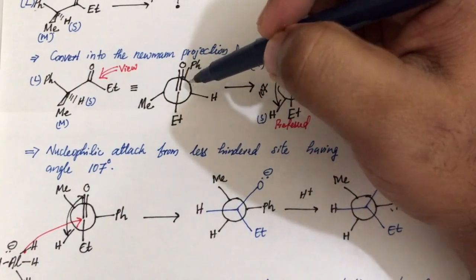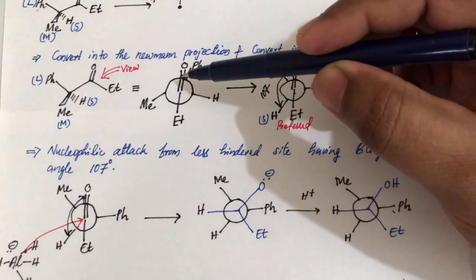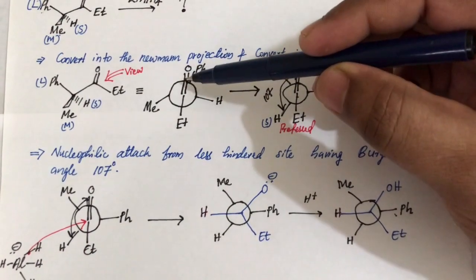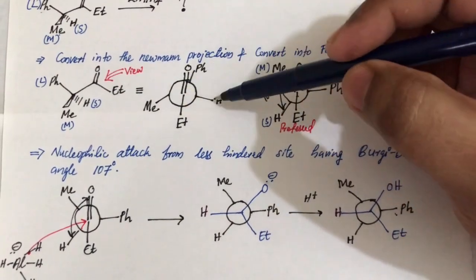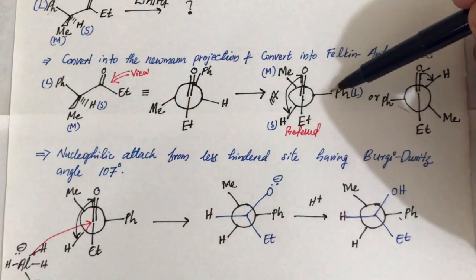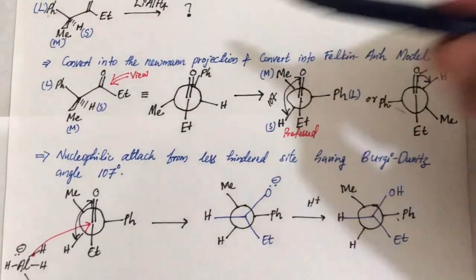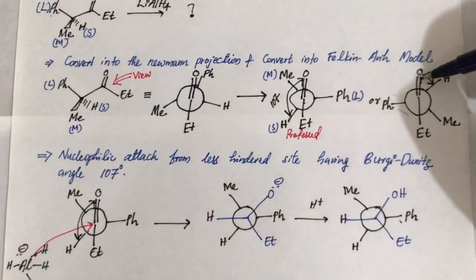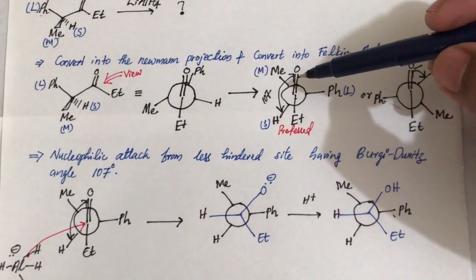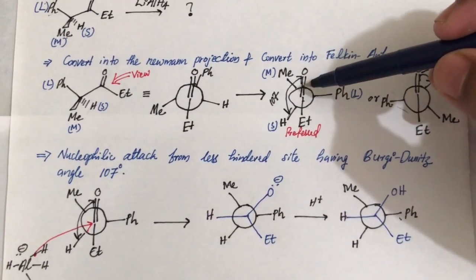Now we convert this into the Felkin-Anh model. The Felkin-Anh model states that the larger group at the alpha carbon should be perpendicular with respect to the carbonyl compound. At the alpha carbon we have Ph, H, and Me. Since Ph is the largest group, it should be perpendicular to the carbonyl. We can also rotate left so Ph comes to the other perpendicular position. Both of these are valid Felkin-Anh conformations.